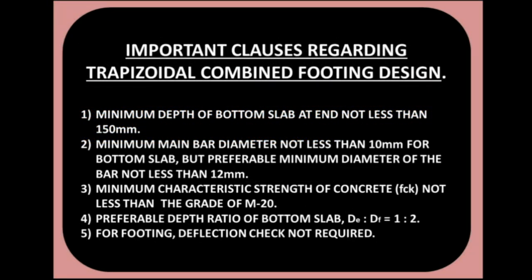Important clauses regarding trapezoidal combined footing design: Minimum depth of bottom slab at end not less than 150 mm. Minimum bar diameter not less than 10 mm for the bottom slab, but preferably not less than 12 mm. Minimum characteristic strength of concrete FCK not less than grade M20. Preferable depth ratio of bottom slab DE to DF equal to 1 to 2. For footing, deflection check is not required.